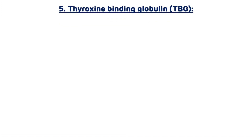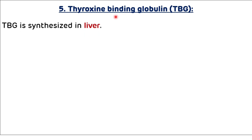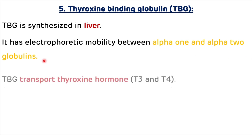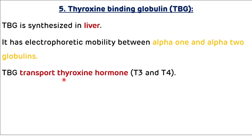Another example of alpha 2 globulin is thyroxine binding globulin. As the name suggests, it binds to thyroxine and is synthesized in the liver. It has an electrophoretic mobility between alpha 1 and alpha 2 globulins, and it transports the thyroxine hormones T3 and T4.